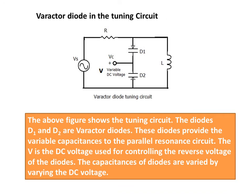Varactor Diode in the Tuning Circuit: The above figure shows the tuning circuit. The diodes D1 and D2 are Varactor Diodes. These diodes provide variable capacitances to the parallel resonance circuit. V is the DC voltage used for controlling the reverse voltage of the diodes, and the capacitance of the diodes is varied by varying the DC voltage.